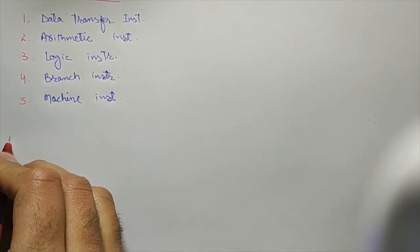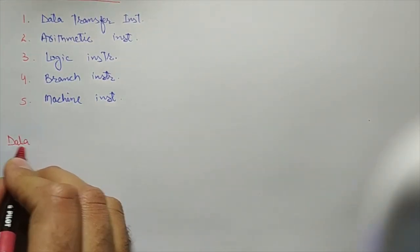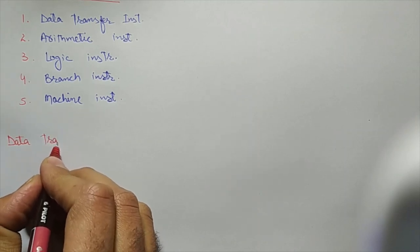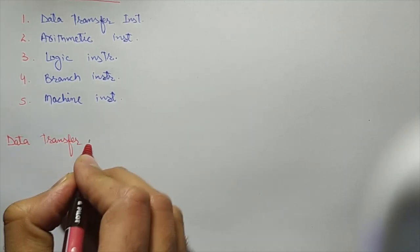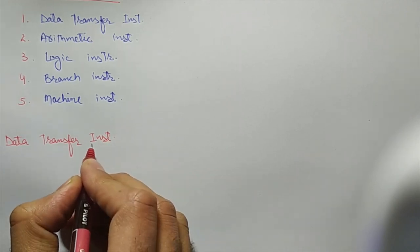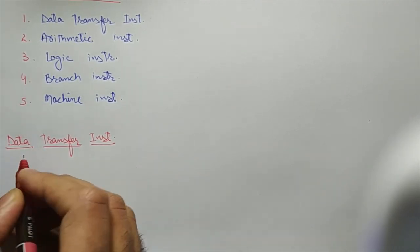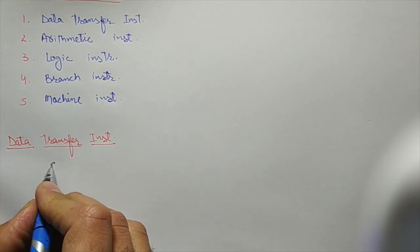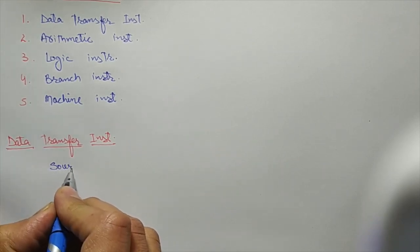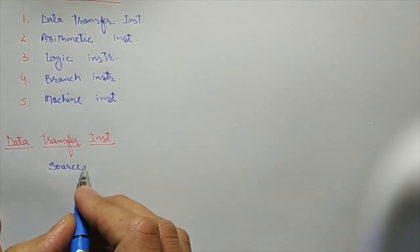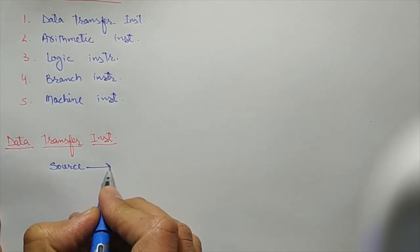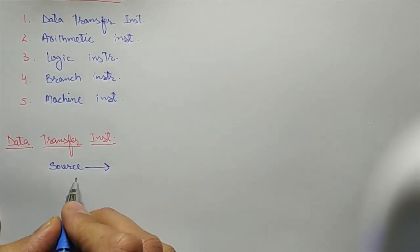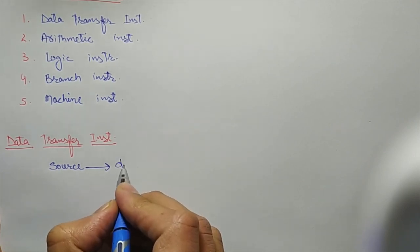Let's first start with data transfer instructions. In data transfer instructions, the main aim is to transfer data from some source. We have to transfer — or move, or copy — data from a source to a destination.